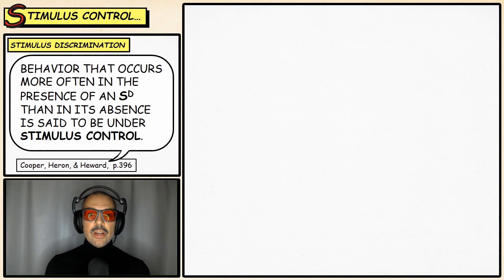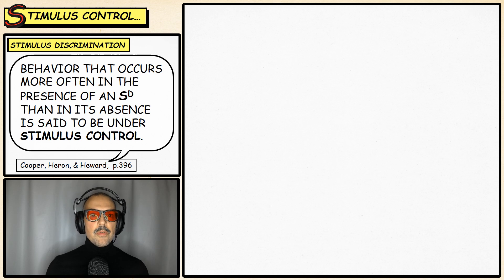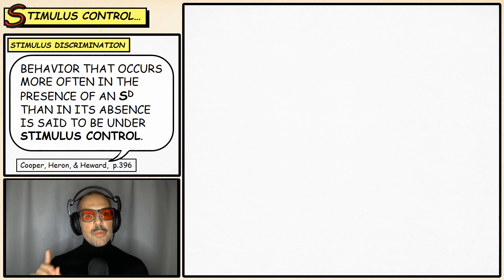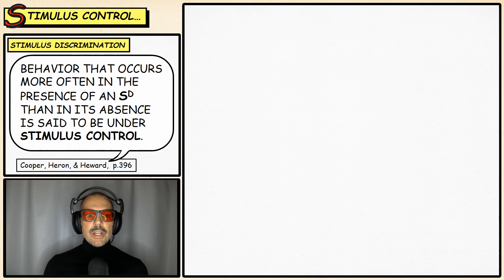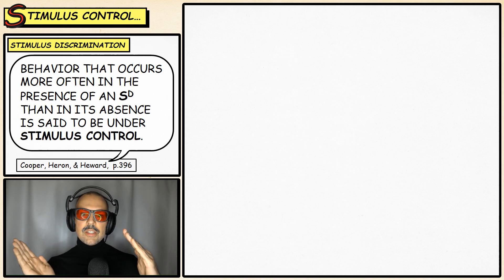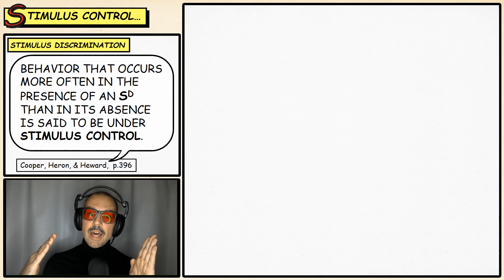Today we're going to be taking a look at the phenomenon of stimulus control. Stimulus control is what occurs when we perform certain behaviors only under certain circumstances, or more precisely, when certain stimuli are present. We're going to take a look at the two forms of stimulus control: stimulus discrimination, when stimulus control is in effect, and stimulus generalization, when stimulus control is not in effect.